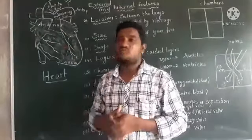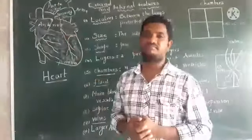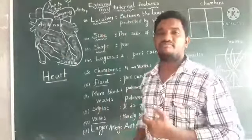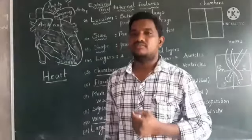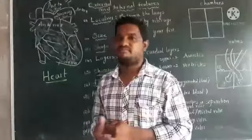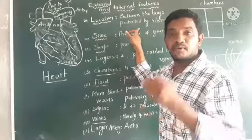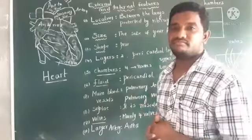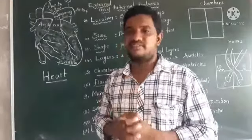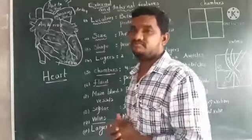Let us see what are the external and internal features of a heart. Coming to the first one: location. What is exactly the location of a heart in our body? It is between the lungs and protected by the ribcage.